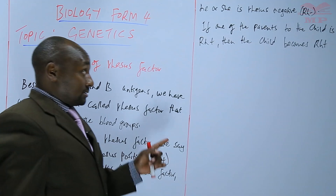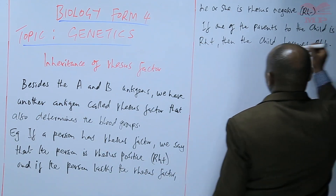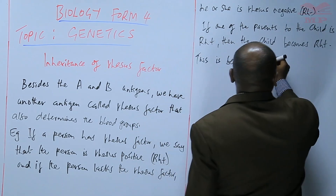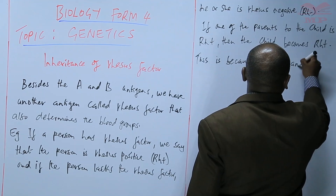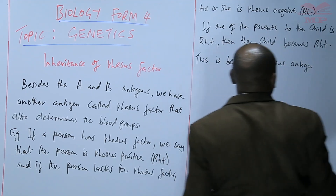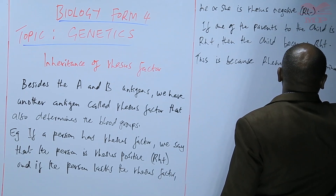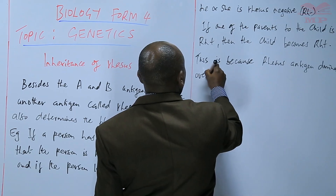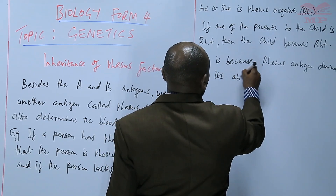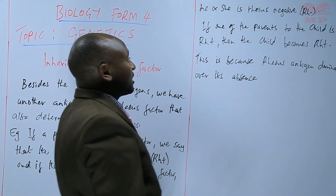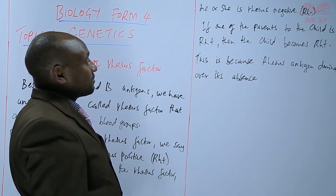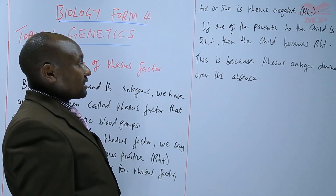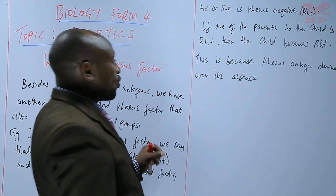The Rhesus antigen dominates over its absence. So if one parent has the Rhesus factor, then the child will automatically inherit that Rhesus factor. The Rhesus antigen dominates over its absence.